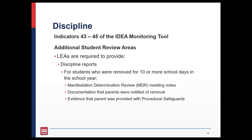Lastly, the final section of the tool covers discipline — indicators 43 through 45. The IDEA monitor will review discipline records provided by the LEA within Box. If a student was removed for 10 or more days, the monitor will review the student's record to determine if the student had a manifestation determination review meeting. We will also review documentation to ensure the parent was informed of the disciplinary action that resulted in the change of placement, and that parents were provided procedural safeguards for that incident.